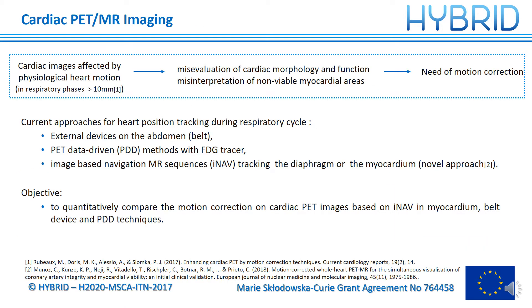Physiological heart motion during cardiac image acquisition degrades the image quality. For example, in the respiratory cycle the heart could move longer than 10 mm between phases, affecting the quantification of the parameters and blurring the structures. This might lead to a mis-evaluation of the cardiac morphology and function and a misinterpretation of non-viable myocardial areas.